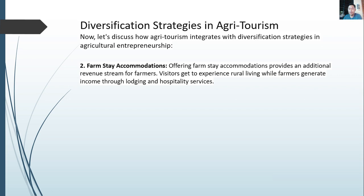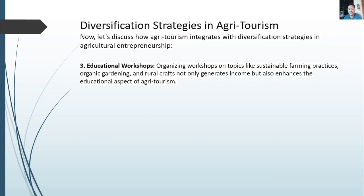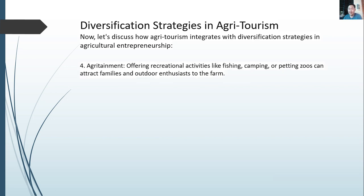Next is farm stay accommodation: offering farm stays provides visitors with an additional experience of rural living while generating lodging and hospitality income for farmers. Then, educational workshops: organizing workshops on topics like sustainable farming practices, organic gardening, and rural crops not only generates income but also enhances the educational aspect of agritourism. Agritainment — offering recreational activities like fishing, camping, or petting zoos — can attract families and outdoor enthusiasts to the farm.